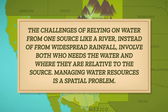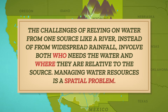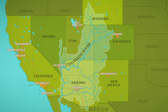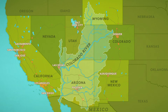The challenges of relying on water from one source like a river, instead of from widespread rainfall, involve both who needs the water and where they are relative to the source. Managing water resources is a spatial problem. The biggest water users are farms, factories, and towns, but they aren't all on the riverbanks, so they have to find ways to transport the water they need. And those that live near the upstream parts of the Colorado River can use a ton of water if unregulated, leaving less for anyone who lives downstream.